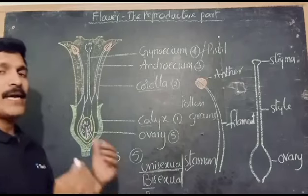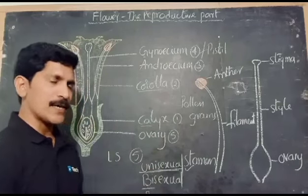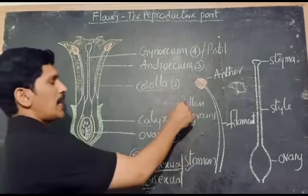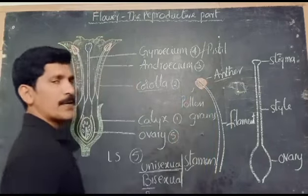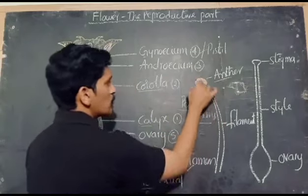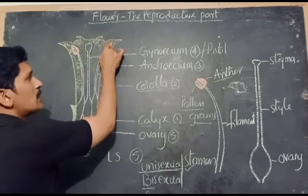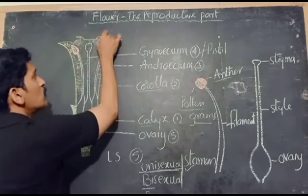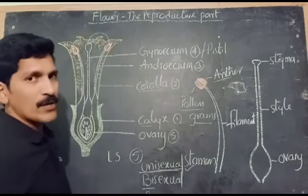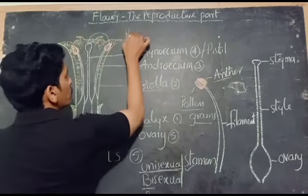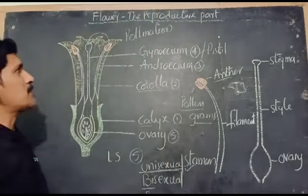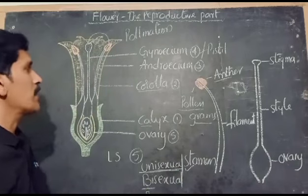In unisexual flowers, either only the male or the female reproductive part is present. Now, what kind of pollination takes place? The anther is the male reproductive part which produces male gametes — pollen grains. Whenever the pollen grains produced in the anther are transferred from anther to stigma, that process is known as pollination.